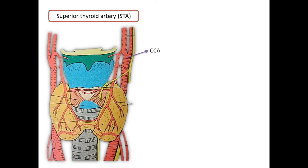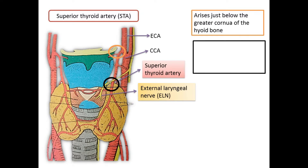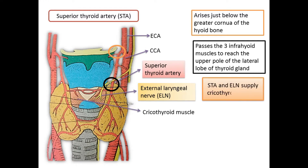The superior thyroid artery arises from the external carotid artery just below the level of the greater cornu of the hyoid bone. It runs downwards and forwards, parallel and just superficial to the external laryngeal nerve. It passes deep to the three long infrahyoid muscles to reach the upper pole of the lateral lobe of the thyroid gland. Its relationship to the external laryngeal nerve, which supplies the cricothyroid muscle, is important during thyroid surgery to avoid injury to the nerve; the superior thyroid artery is ligated as near to the gland as possible.